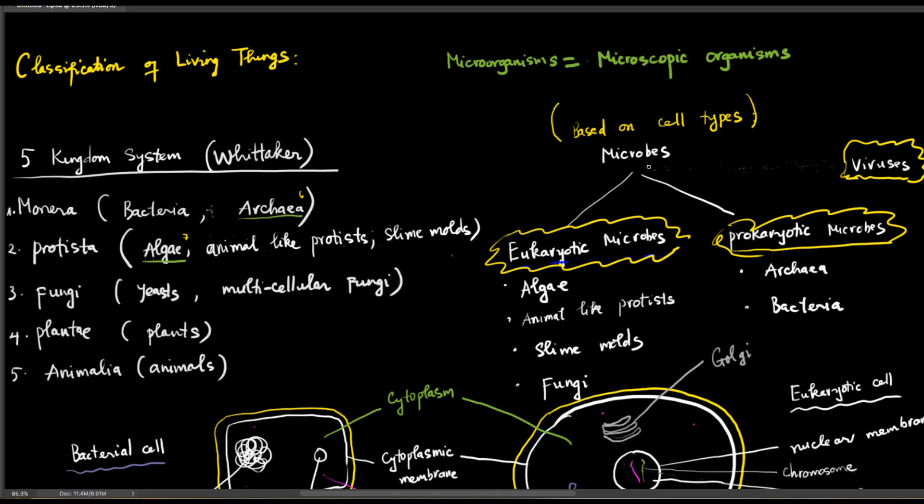we have the Monera, Protista, Fungi, Plantae, and Animalia. In the seven kingdom system, Archaea are separated from bacteria, and algae and some water molds are placed into another kingdom.